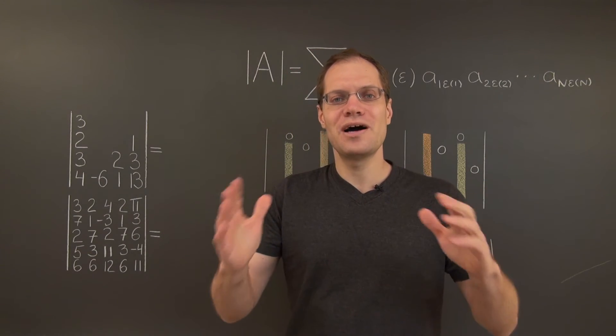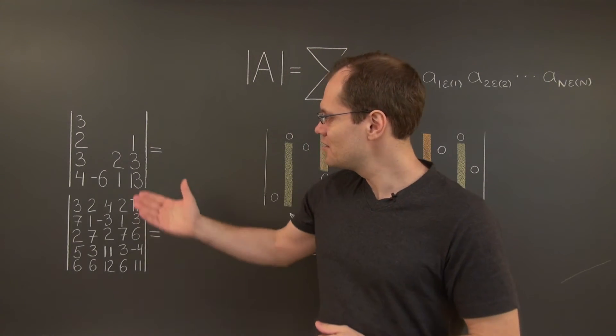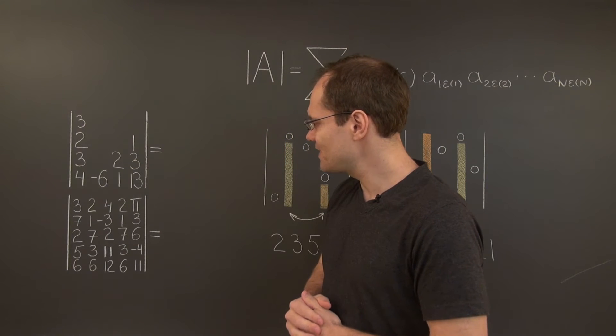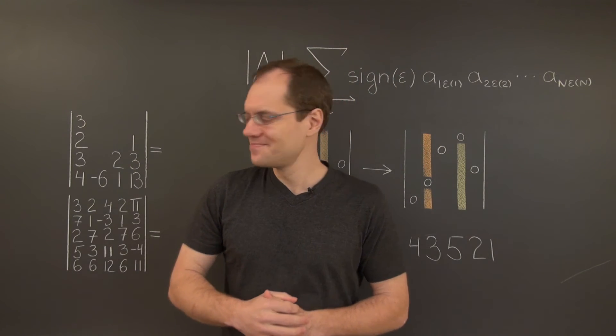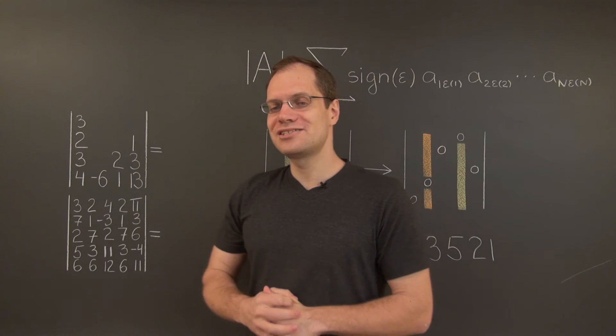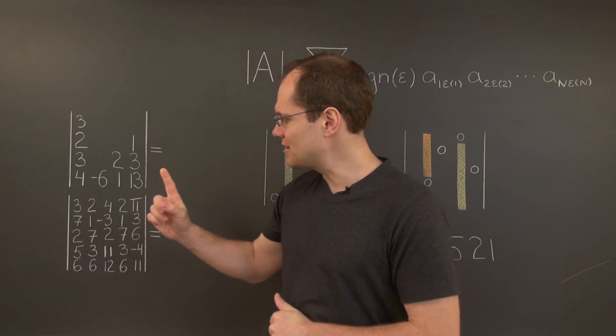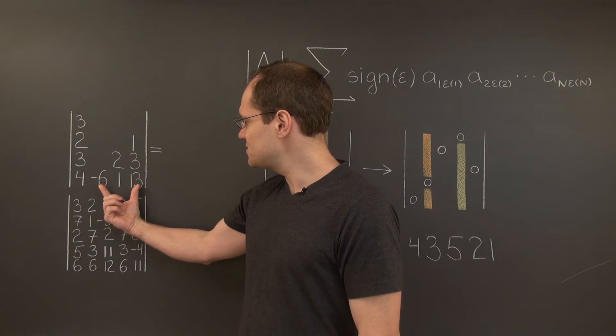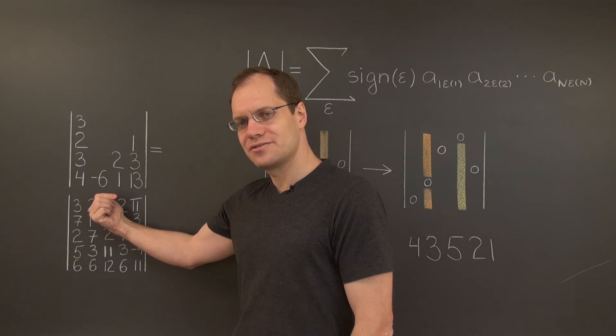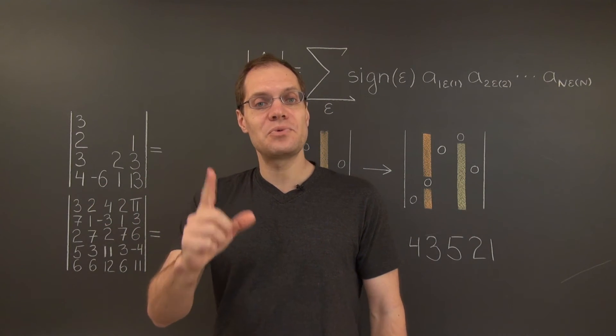So let's consider just one more simple example. Take a look at this matrix and determine its determinant. And it has to be 36 because this determinant is one column switch away from the determinant that we considered before,